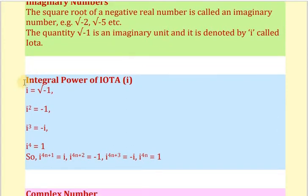Now let us see the integral powers of iota, that is i. As we know, i is equal to square root of minus 1. So after squaring both sides, we get i squared equals minus 1. Until now we have studied that the square of any number is non-negative, meaning either 0 or positive. But now in imaginary numbers we will see that i squared is equal to minus 1.